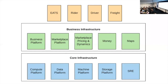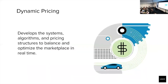Marketplace sits more in the middle tier. In that middle tier we have business platform, we have money — making sure riders are charged accurately and drivers get paid accurately — we've got a Maps team which handles ETAs, like when we tell you it'll take 12 minutes to get across San Francisco. And then there's marketplace itself, which includes marketplace platform and everything around pricing and dynamics.